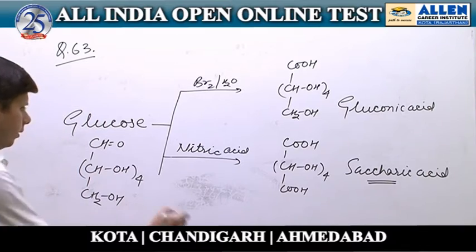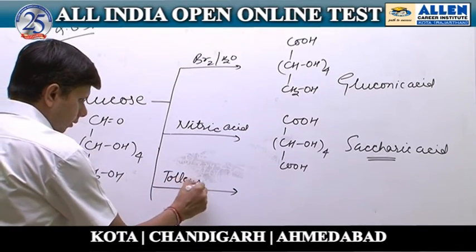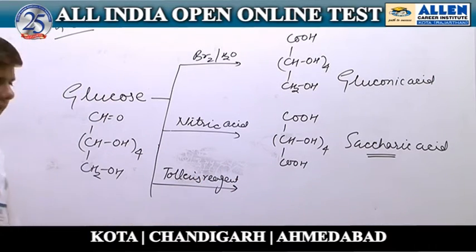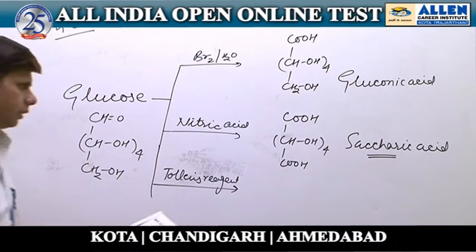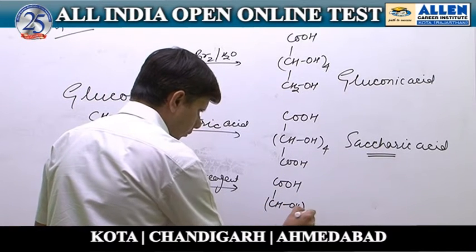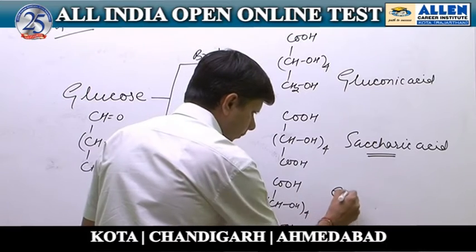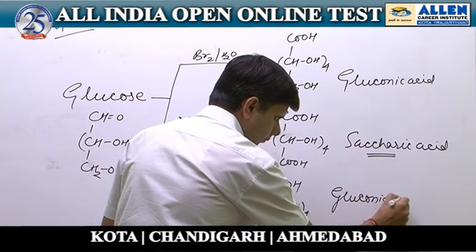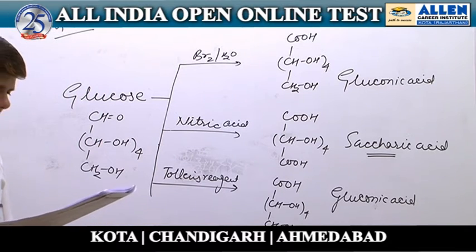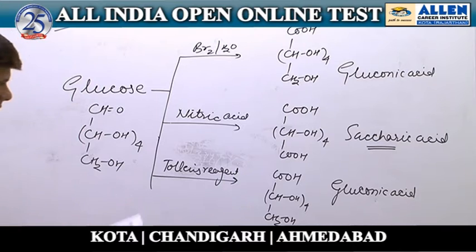Third option: glucose reacted with Tollens reagent. Tollens reagent also oxidizes the aldehyde group into an acidic group, forming gluconic acid. This matches the option, so it is correct. In the fourth option, glucose reacted with sodium amalgam plus water.